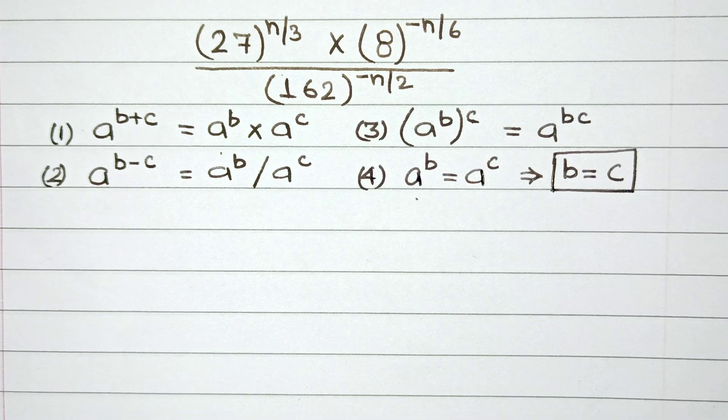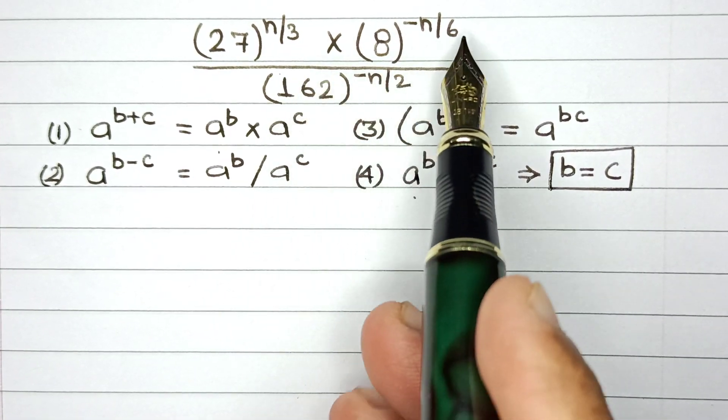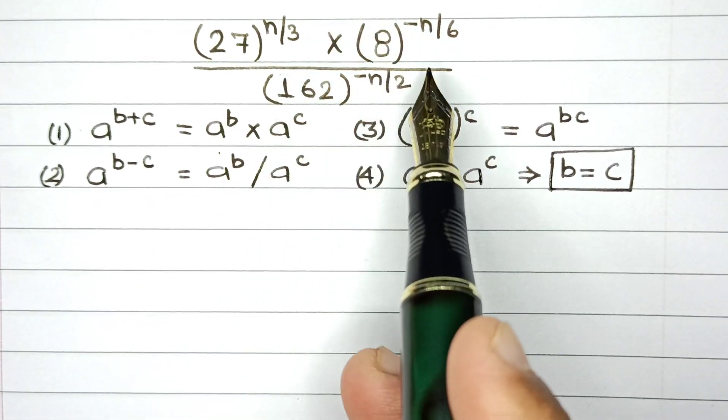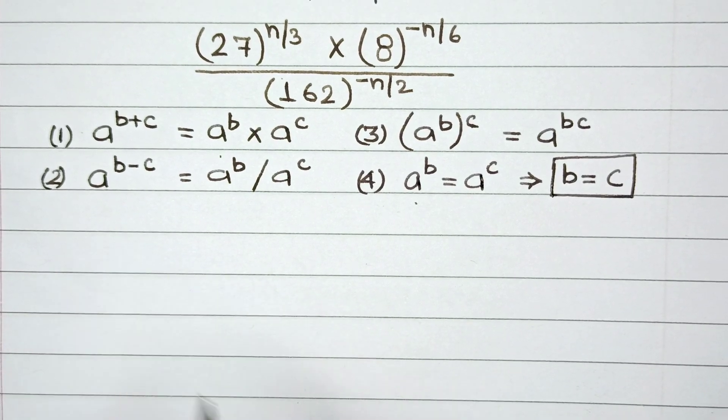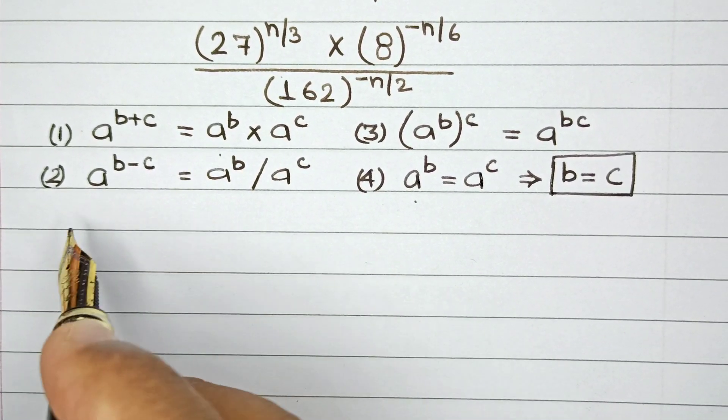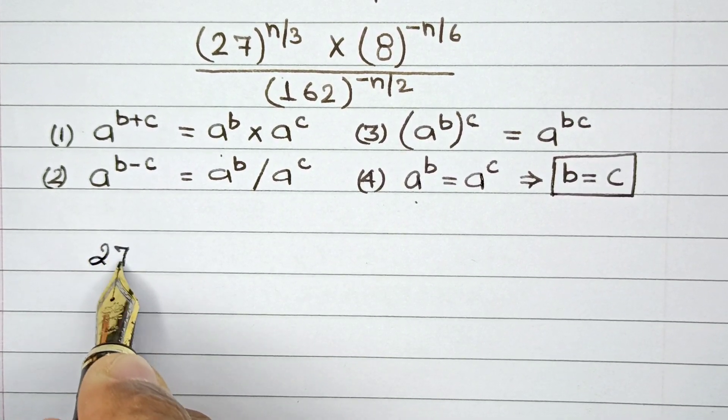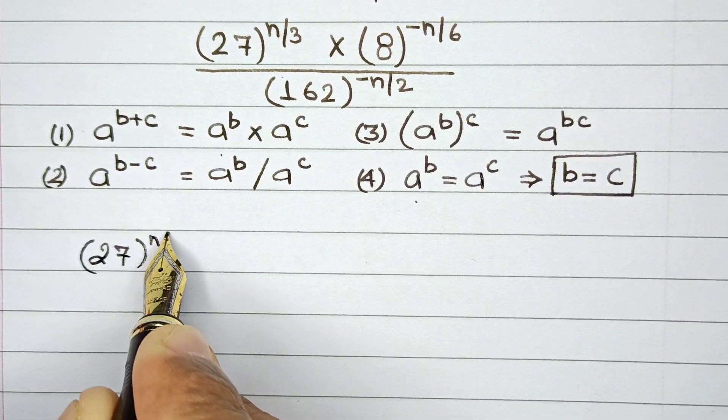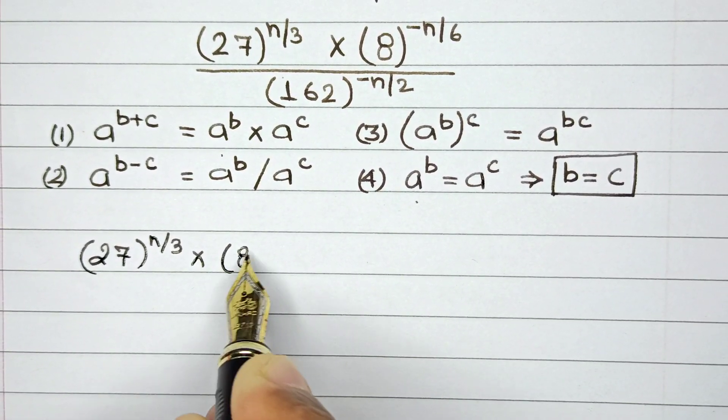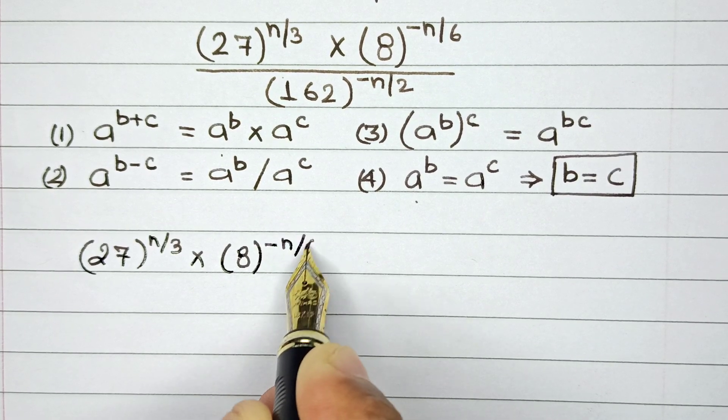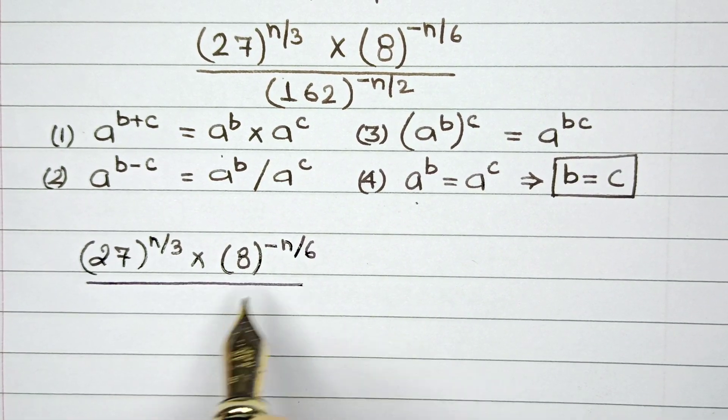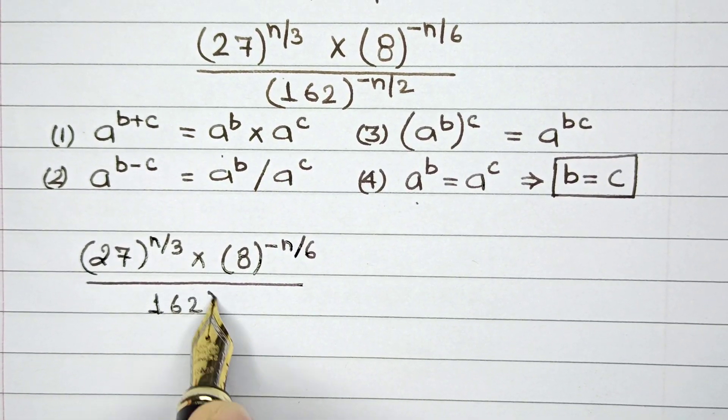And now we are going to use these four properties as per our situation in the given question where we have to kind of solve and simplify this expression. So first of all let me write the question once again. So this is 27 raised to the power n by 3 multiplied by 8 raised to the power minus of n by 6...